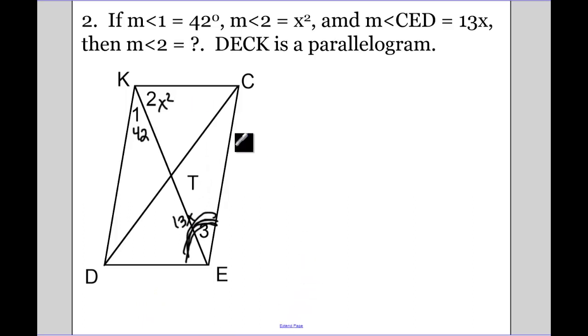So we know that opposite angles are congruent. So this whole big angle, angle CKD, is going to be equal to angle CED, because opposite angles are congruent. So I know that X squared plus 42 equals 13X. Let's solve.